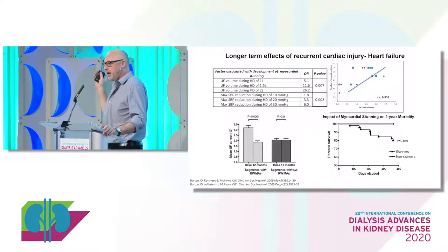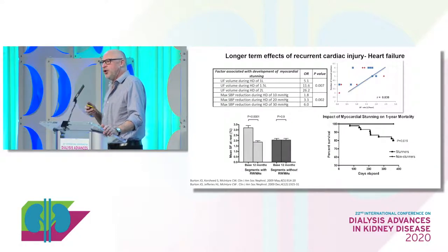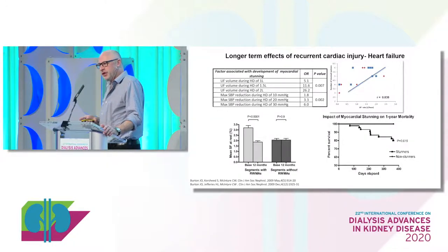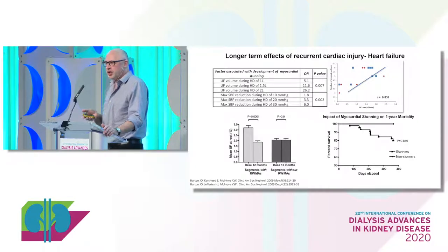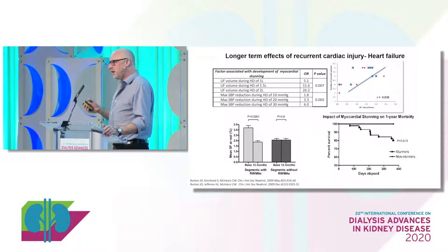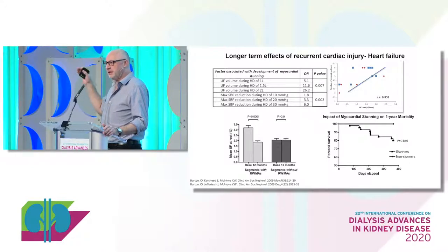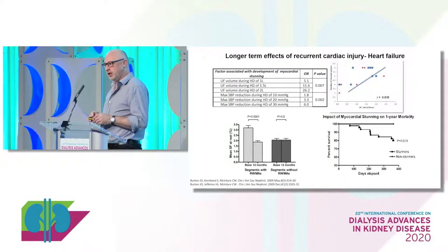The top line is the third of patients who didn't stun, and in a year, nobody died. Every single patient who died in that year was somebody who exhibited dialysis-induced cardiac injury. Our colleagues from the Netherlands, Kasper Fransen, demonstrated very nicely that with each increase in number of segments stunned, there's a further detriment to survival — a dose-response relationship.